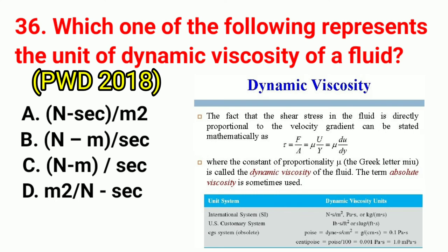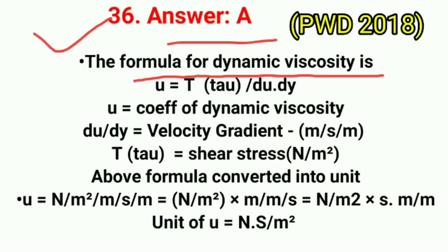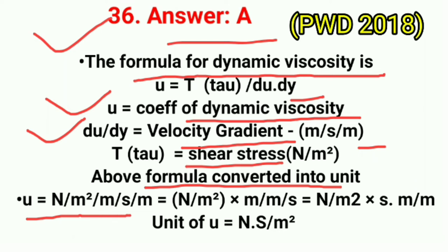Question No. 36. Which one of the following represents the unit of dynamic viscosity of a fluid? Correct answer is option A: Newton·second per meter square (N·s/m²). The formula for dynamic viscosity is μ = τ / (du/dy), where τ is shear stress in N/m² and du/dy is velocity gradient in (m/s)/m. Converting units gives μ = N/m² × s = N·s/m².